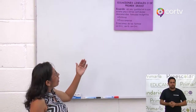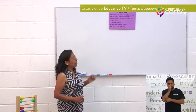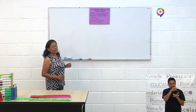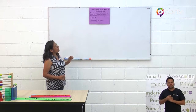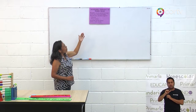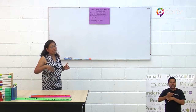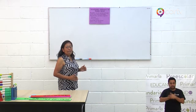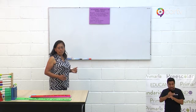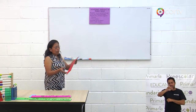Una ecuación es una igualdad en la que existe una o varias cantidades desconocidas llamadas incógnitas. Puede haber ecuaciones enteras y ecuaciones fraccionarias. Hay ecuaciones de las formas AX más B igual con C, AX igual con B, y AX más B más C. Ahora vamos a abordar ecuaciones lineales o de primer grado. Posteriormente estaremos abordando las ecuaciones de segundo grado o cuadráticas. Vamos a iniciar con el primer problema.